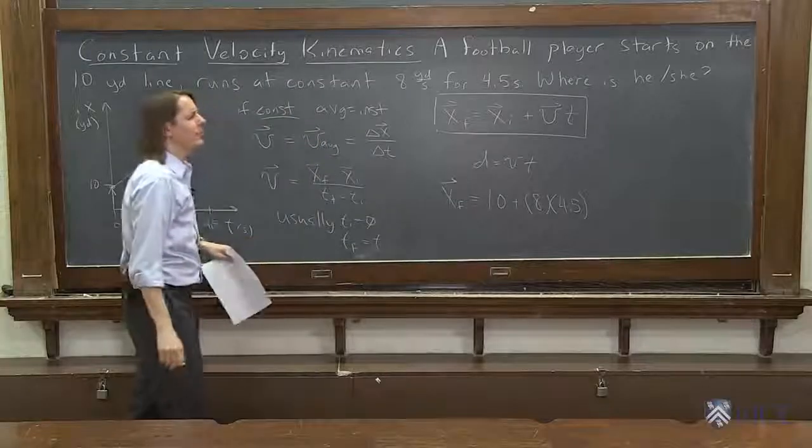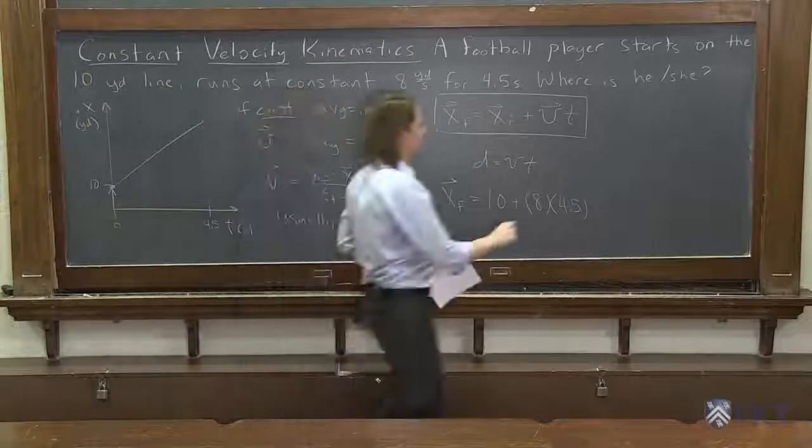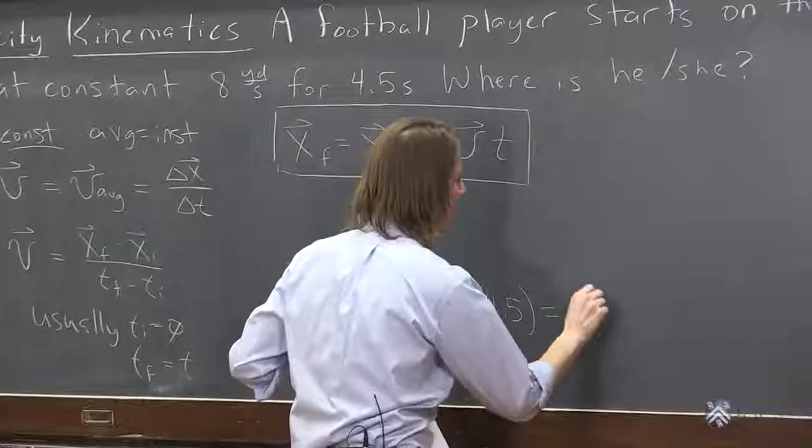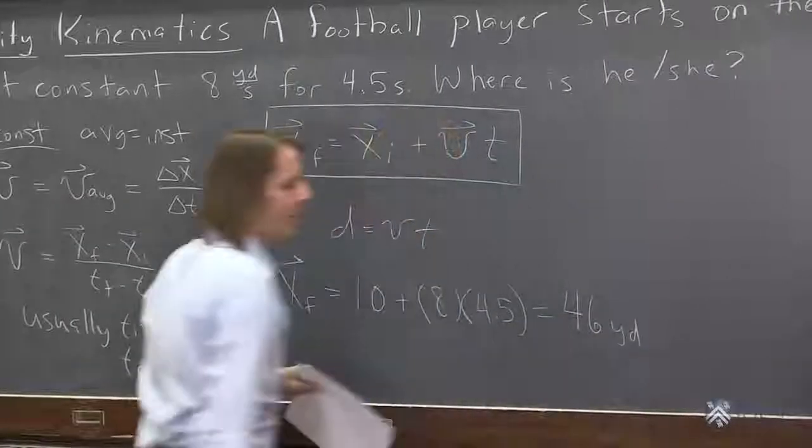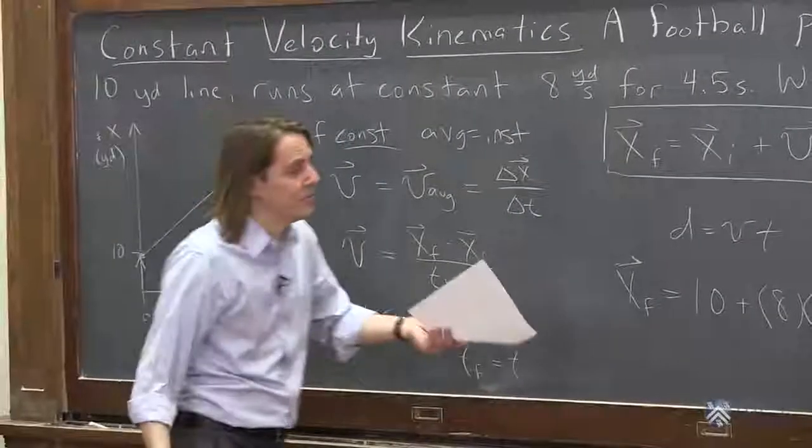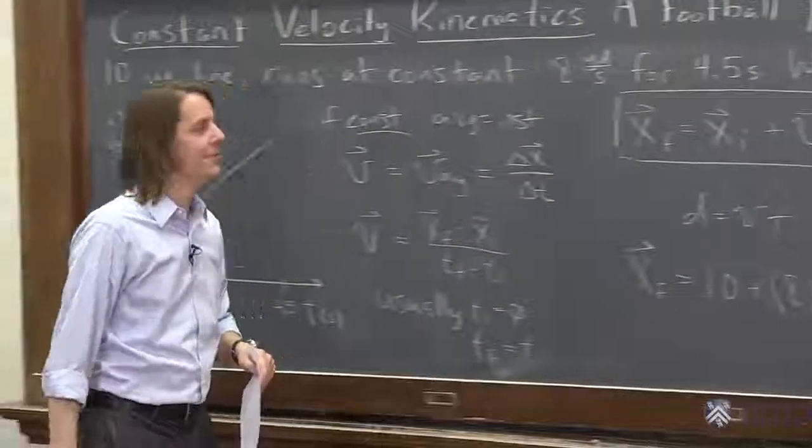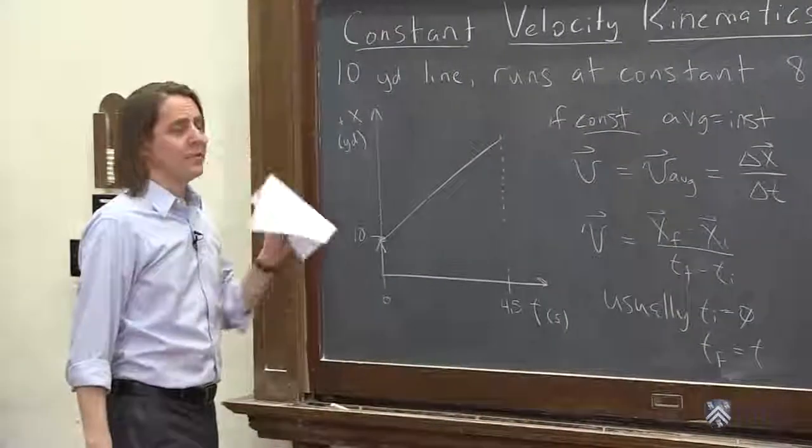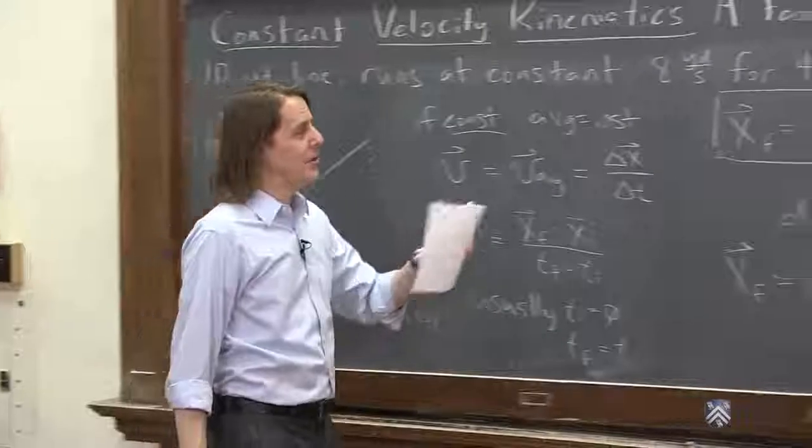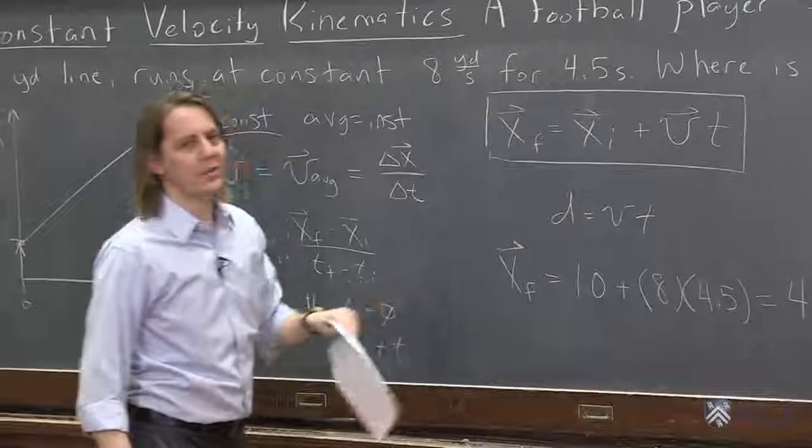All right, so 8 times 4.5, 32 plus just 36, 36 plus 10 is 46. So it's the 46-yard line is where they ended up. And since it's a vector, I'll put i hat. We'll say i hat is the unit vector for downfield. OK, so that's your first kinematics equation that you may want to know for constant velocity only.